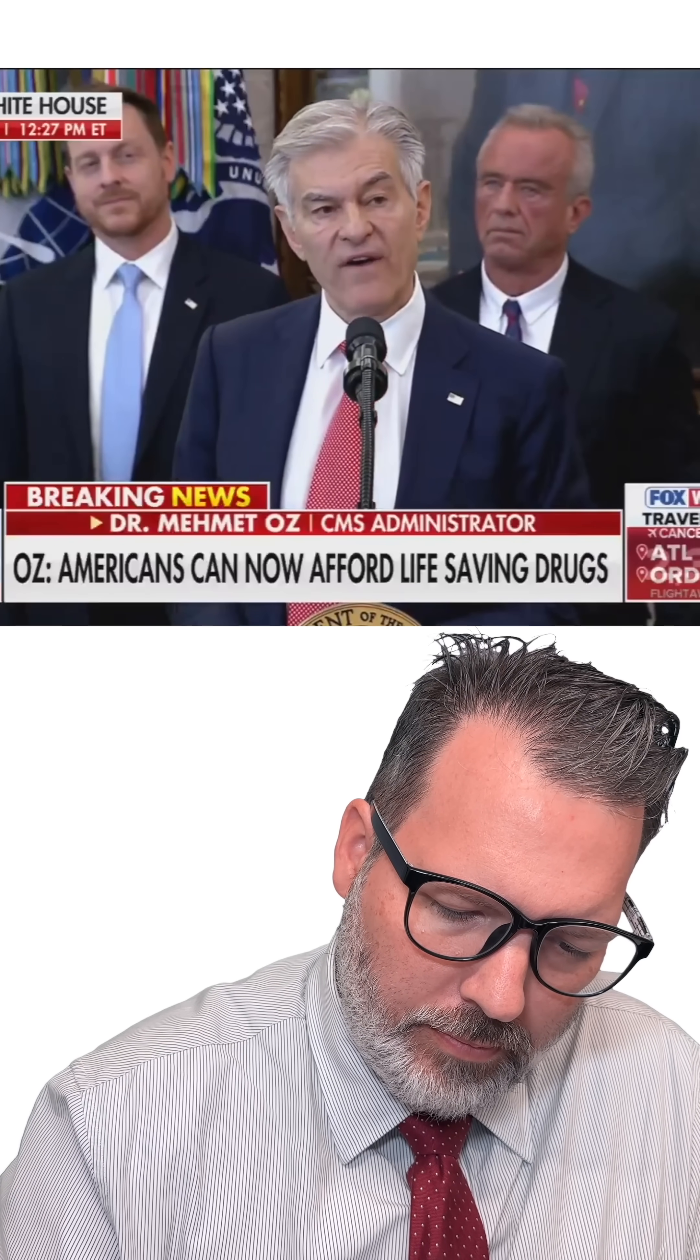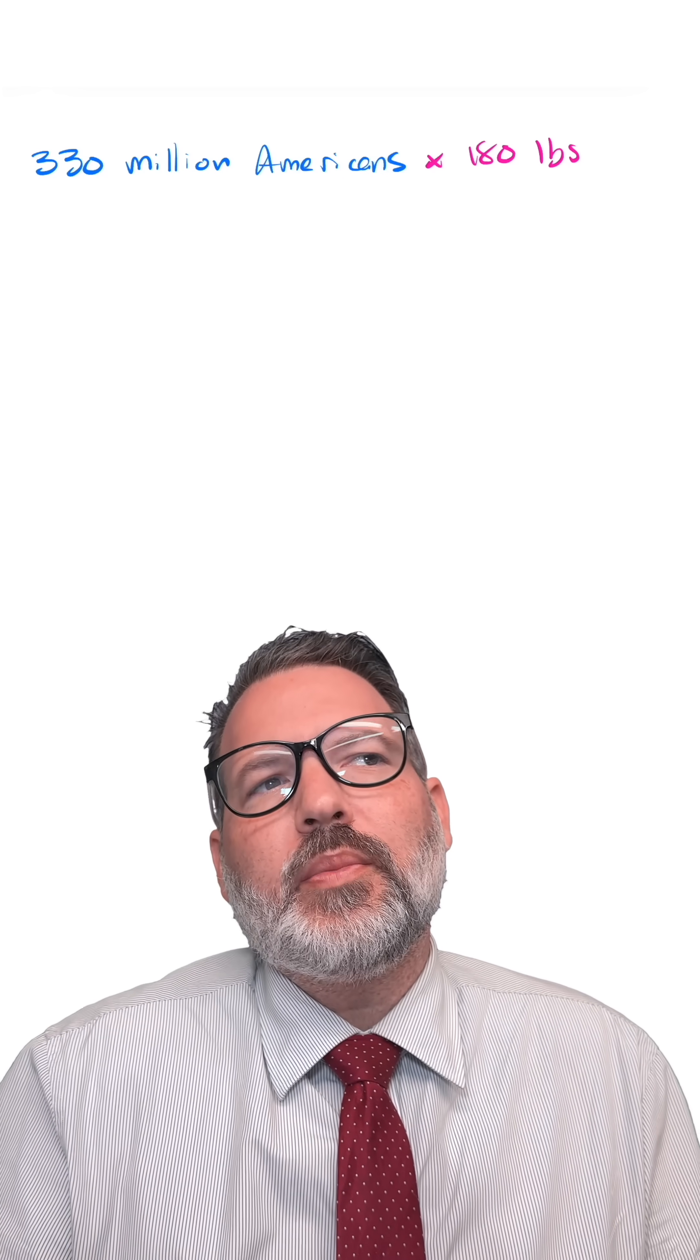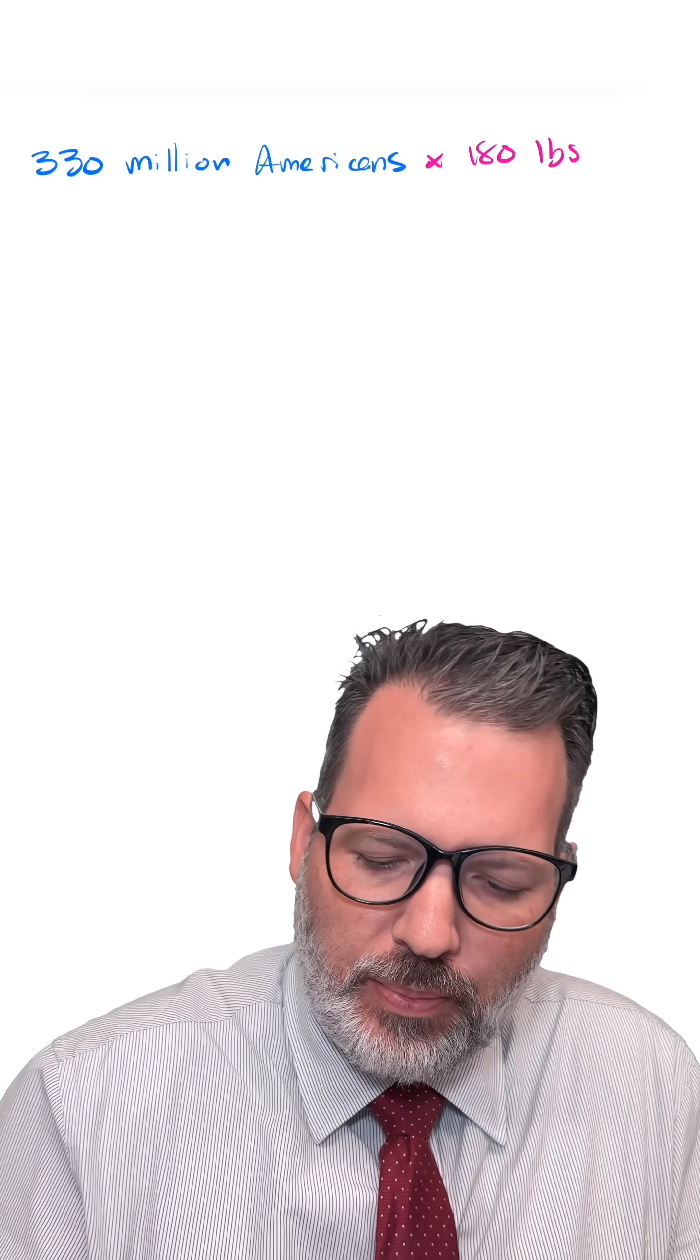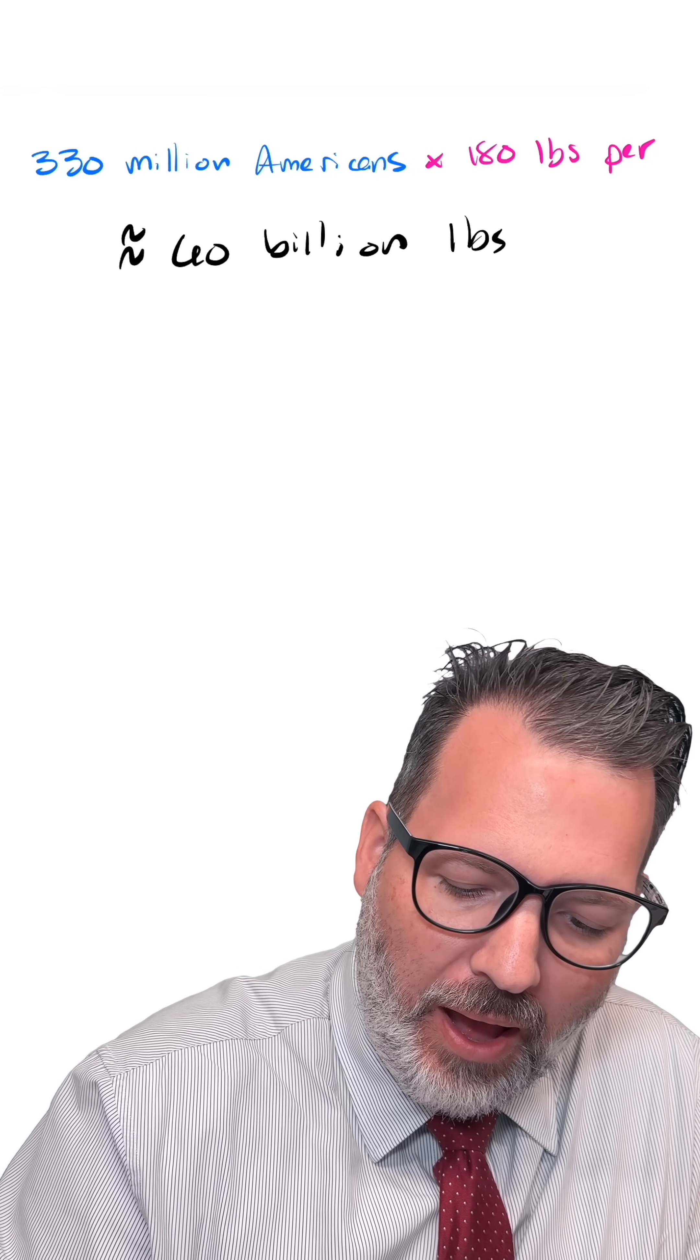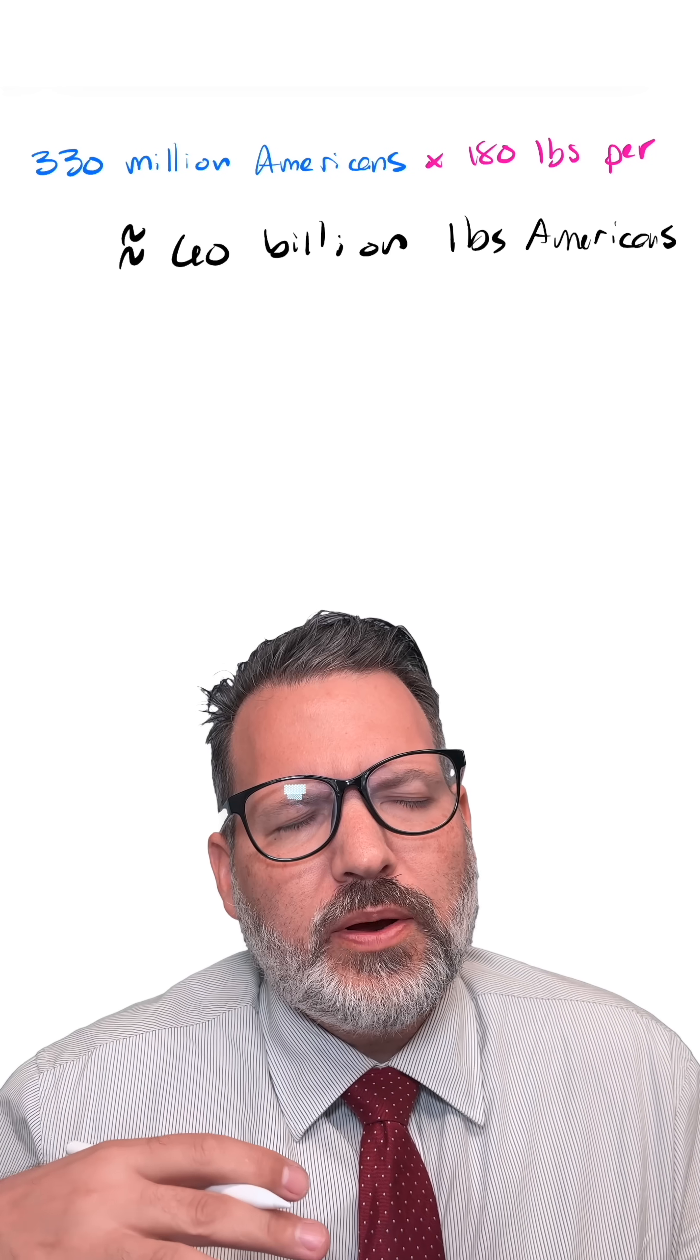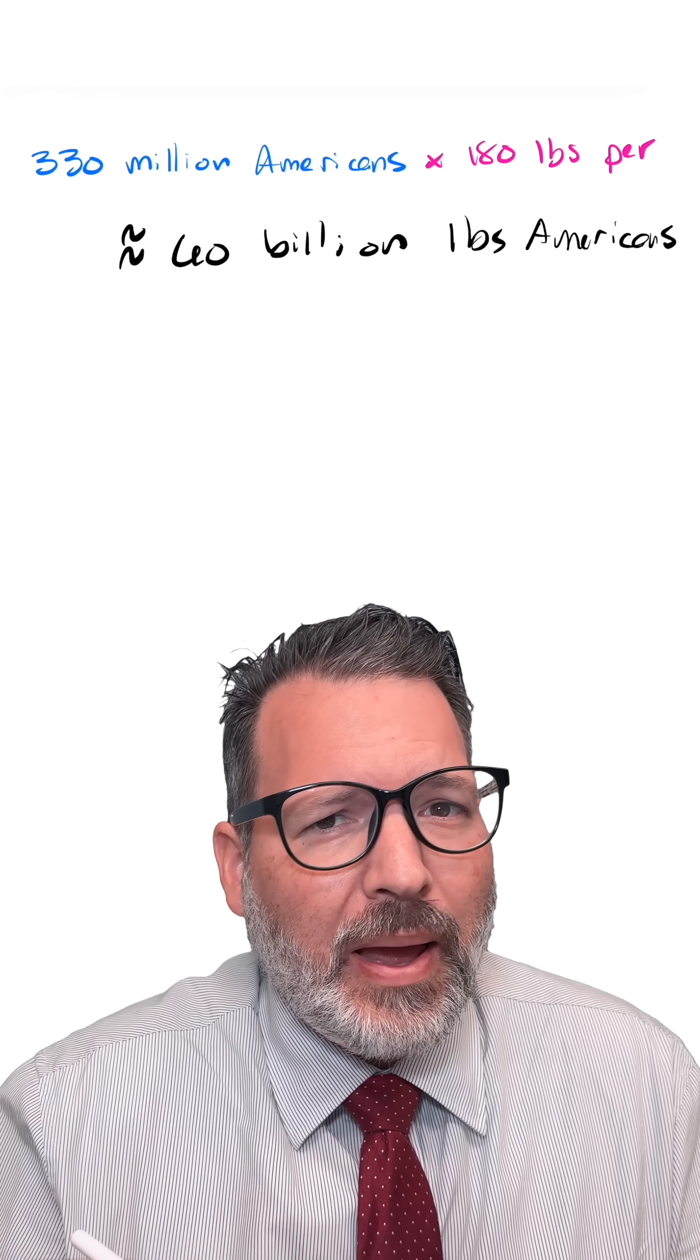is Americans will lose 135 billion pounds by the midterms. So there are 330 million Americans times 180 pounds each on average, which gives that there are roughly 60 billion pounds of Americans. So if the GLP-1s helped us lose 135 billion pounds of Americans,